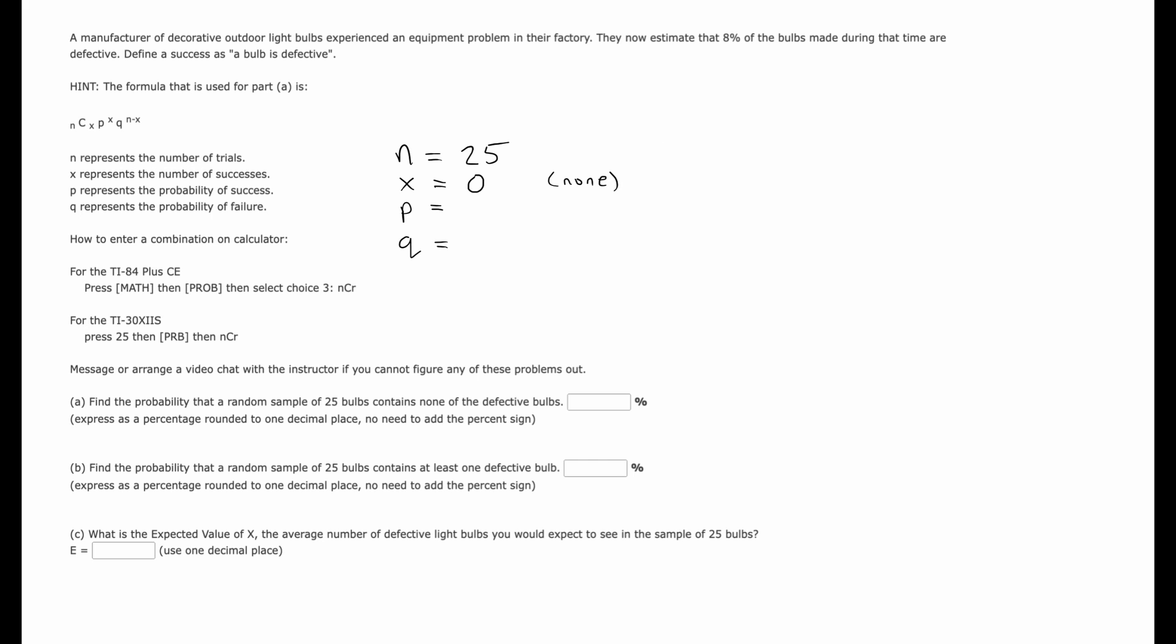Probability P is the chance of finding success, 0.08. This is the probability of encountering or finding a defective bulb. Alright, so Q always has the formula Q is one minus P, so it would be 0.92. That's the probability of not finding a defective bulb.